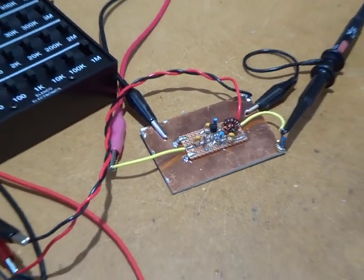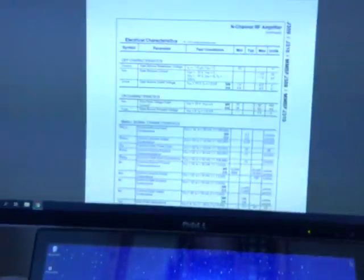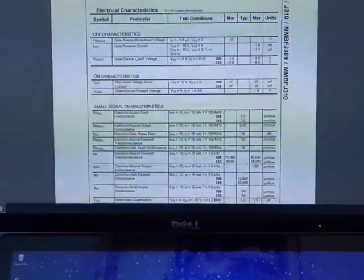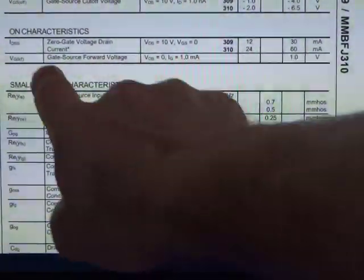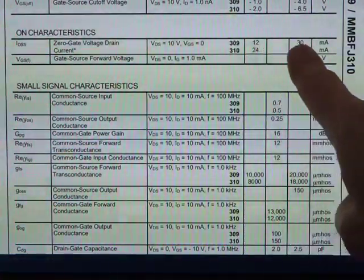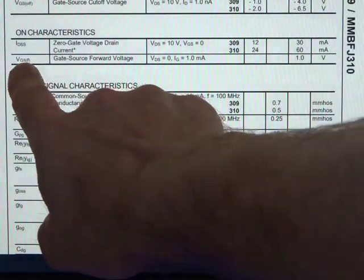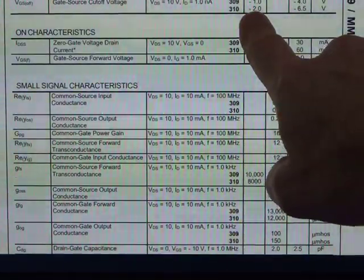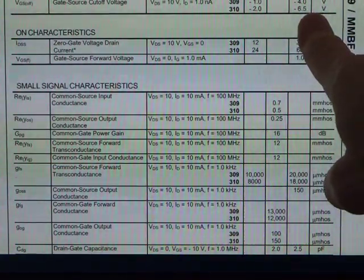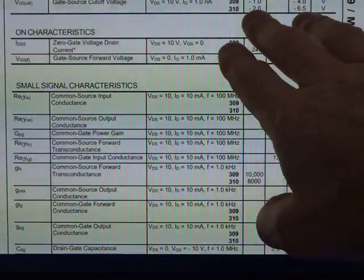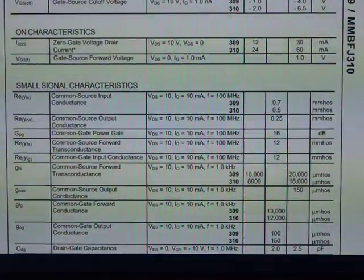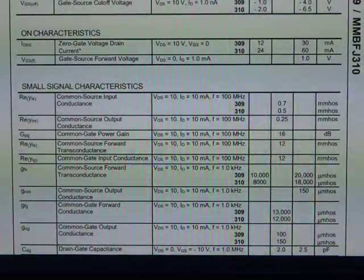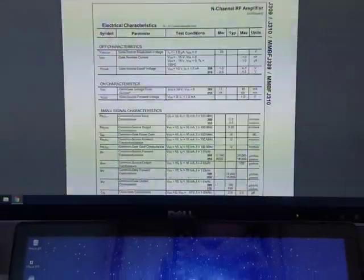Going back to basics, let me go to the screen here. We can see the spec sheet for the J310, and in a similar fashion to the MPF102, the IDSS value has a range from 12 to 30 milliamps, and the VGS gives us minus 2 to minus 6.5 volts for that pinch-off voltage. As suggested by Wes, a better idea is to measure those values using a little test setup and then use those values in the formulas.